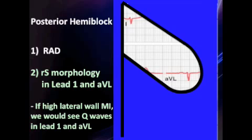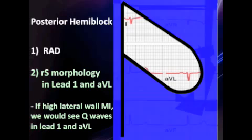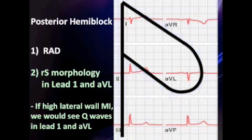So, number one: right axis deviation. Number two: RS morphology in leads 1 and AVL, as well as exclusion of all other causes of right axis deviation. So it's really that simple.